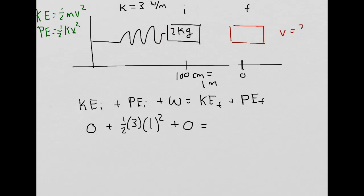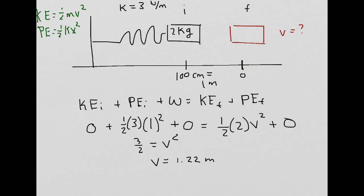For the final kinetic energy at the equilibrium point, that's one half times the mass of 2 kilograms times v squared, which is what we're looking for. The potential energy at the equilibrium point is zero because the distance x from the equilibrium point is zero. Solving the math, I get 3 over 2 equals v squared. Taking the square root of both sides, v equals approximately 1.22 meters per second.